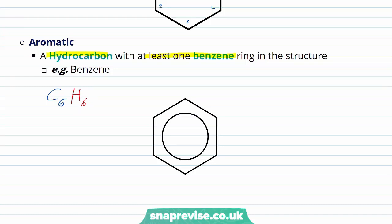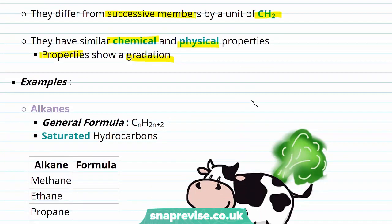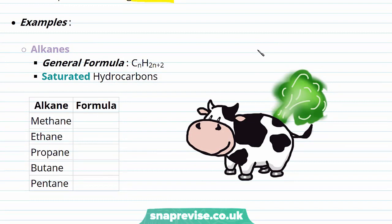So now we've had a look at an introduction to hydrocarbons and the different types of hydrocarbons, let's have a look at the term homologous series. So what is a homologous series? Well, members of a homologous series are similar — they have the same functional group and they differ from successive members by a unit of CH2. They have similar chemical and physical properties and these properties show a gradation. Let's take a look at some examples of homologous series.